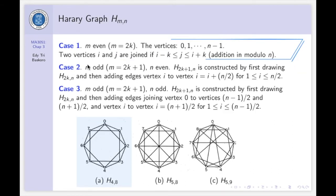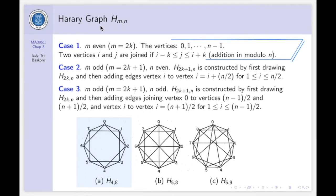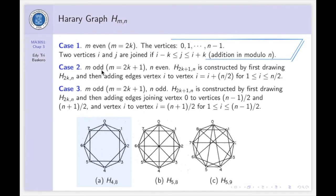Now, we are going to define what the Harary graph is. We denote by H_M,N for the Harary graph. The vertices of the graph are 0, 1, 2, up to N minus 1. And the edges of the graph are defined depending on the parity of M and N.